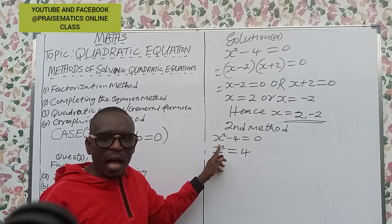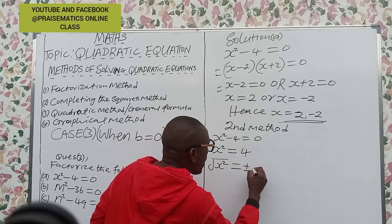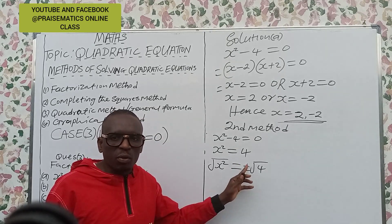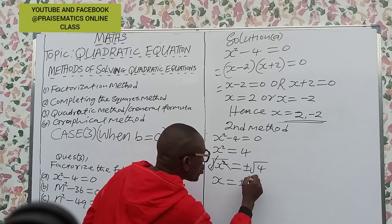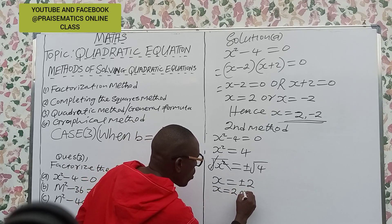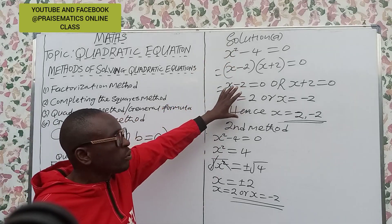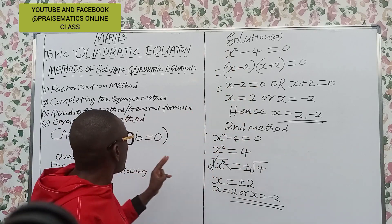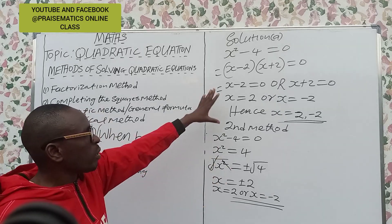So we square root both sides: √(x²) = ±√4. The square root cancels the square, leaving x = ±2, because this is a quadratic equation and it attracts plus or minus. So x = +2 or x = -2 — the same result as before. You only apply this method in the case where b from the quadratic equation is equal to zero; in other words, when you are given ax² and a constant only.